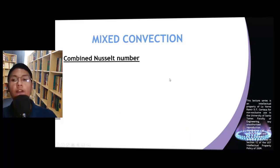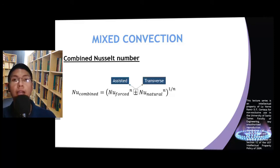Computing for the total rate of convection when mixed convection occurs requires the computation of the combined Nusselt number. It can be computed using this formula. We use addition when we have either assisted or transverse flow, while we use subtraction when opposing flow occurs.